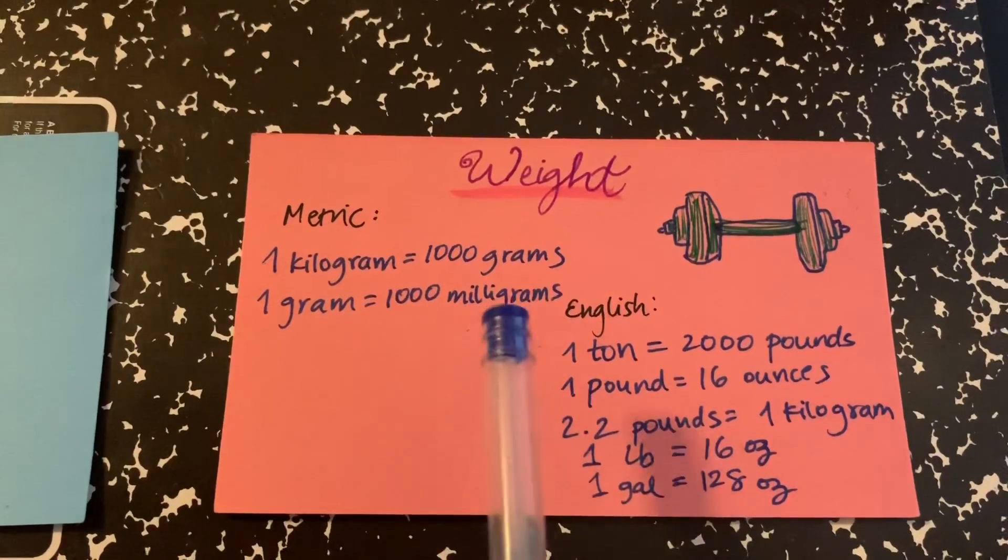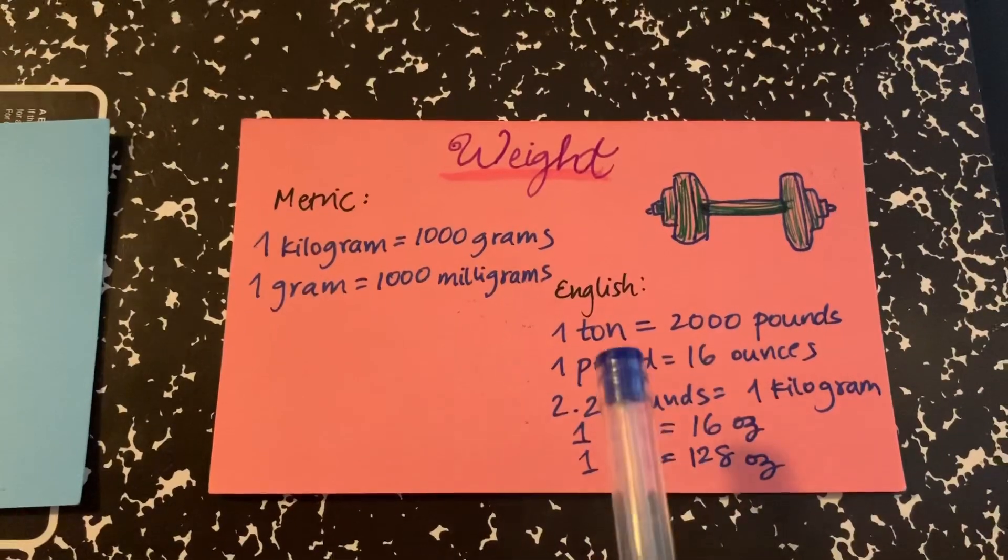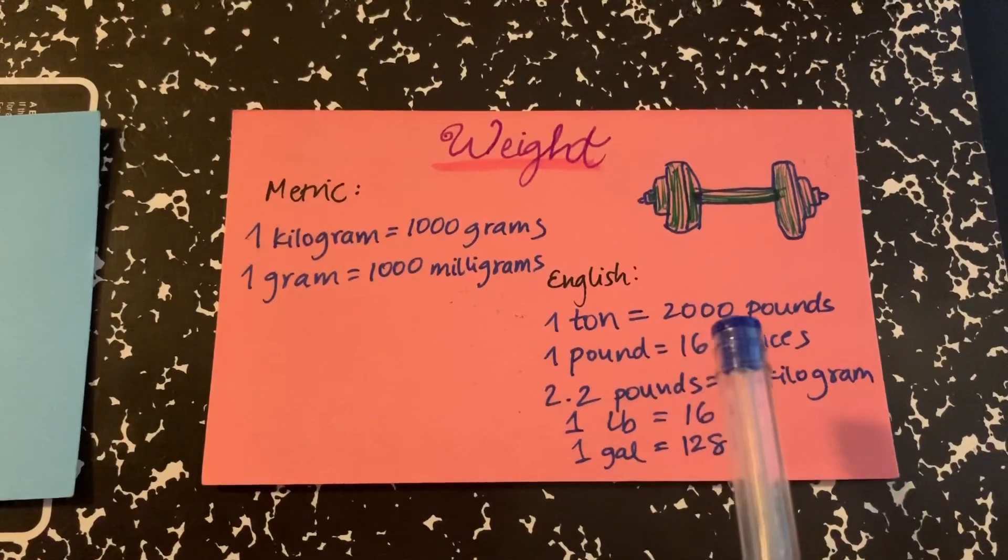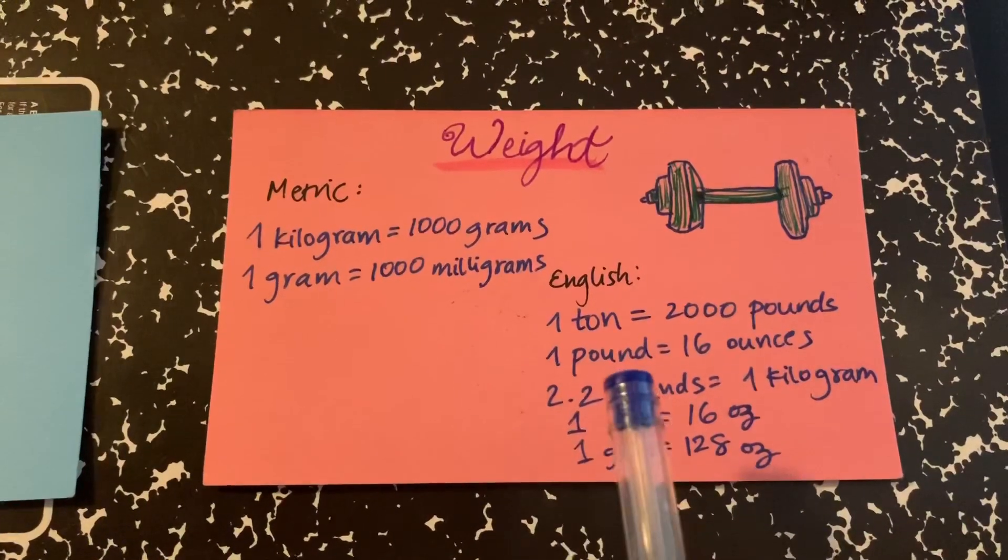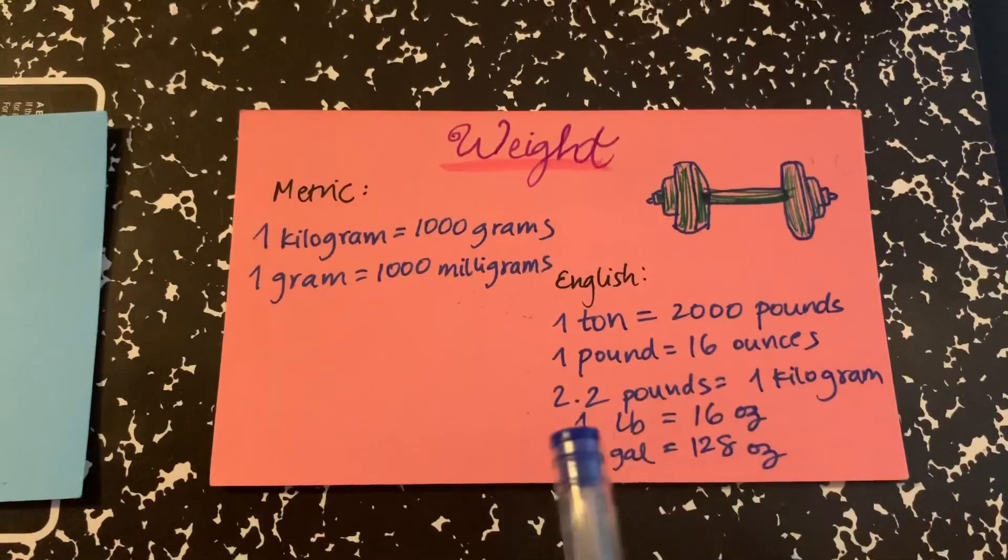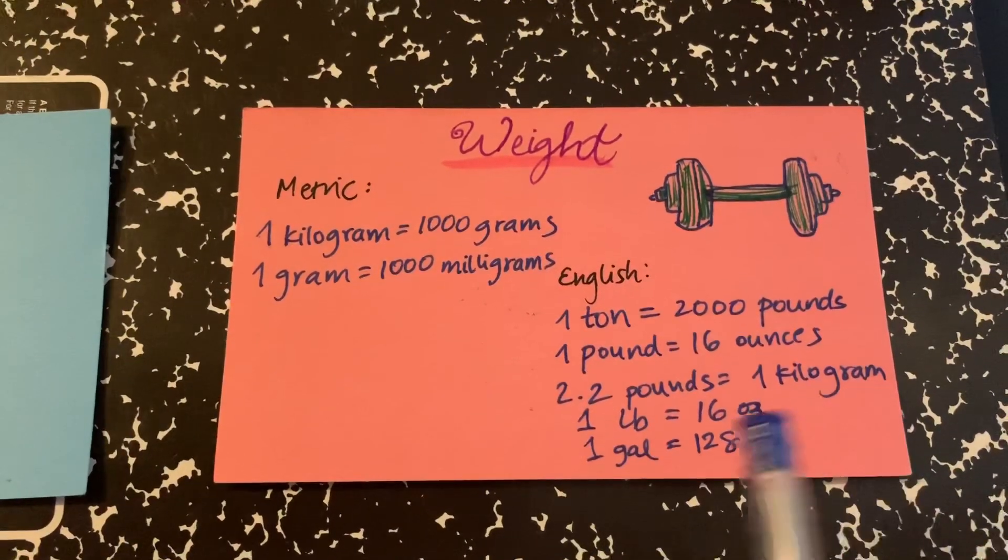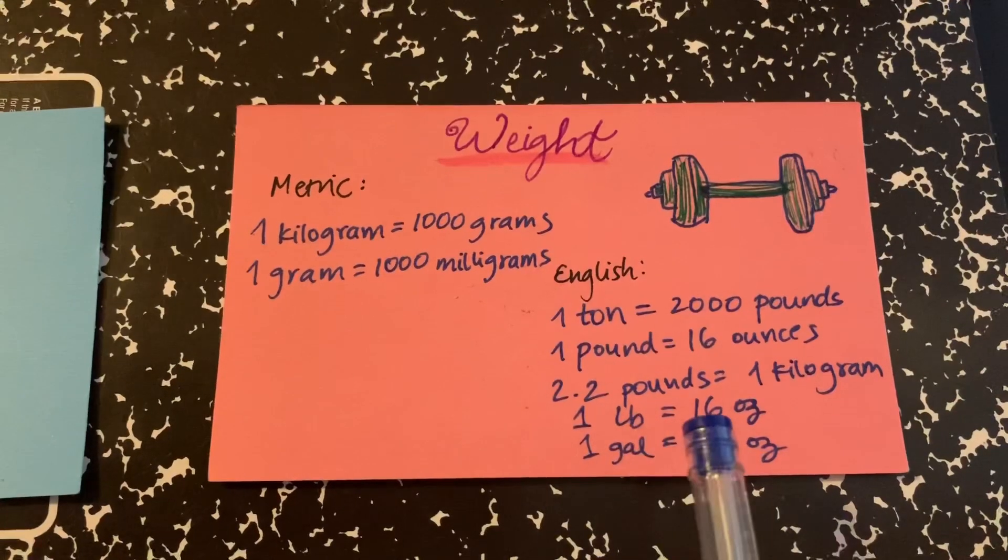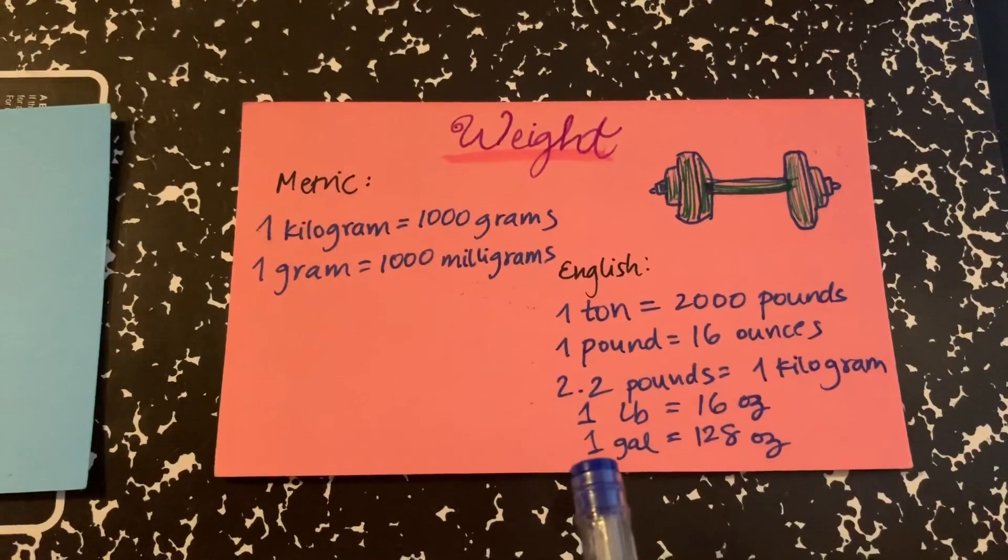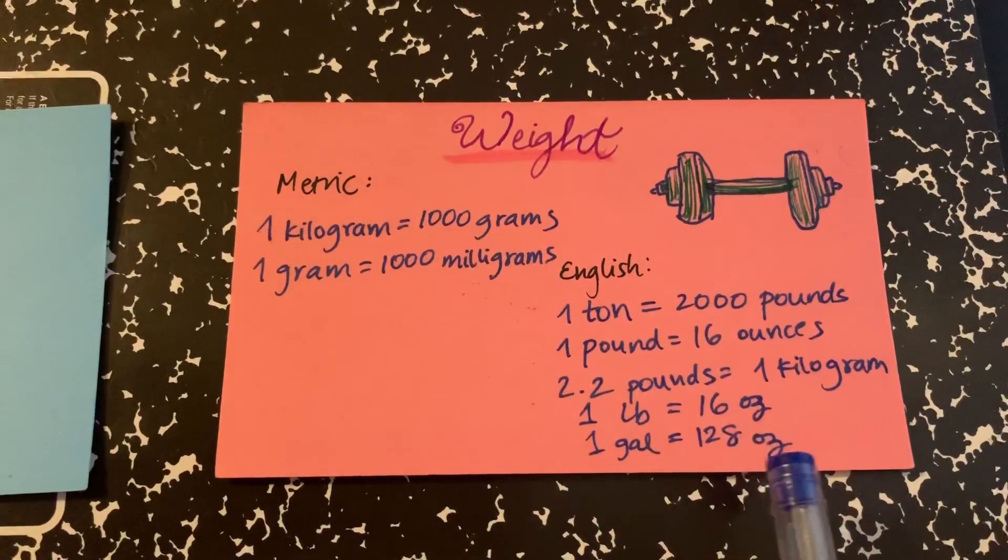1 gram is equal to 1,000 milligrams. In the English one, we have 1 ton is equal to 2,000 pounds, 1 pound is equal to 16 ounces, 2.2 pounds is equal to 1 kilogram, 1 pound is equal to 16 ounces, and 1 gallon is equal to 128 ounces.